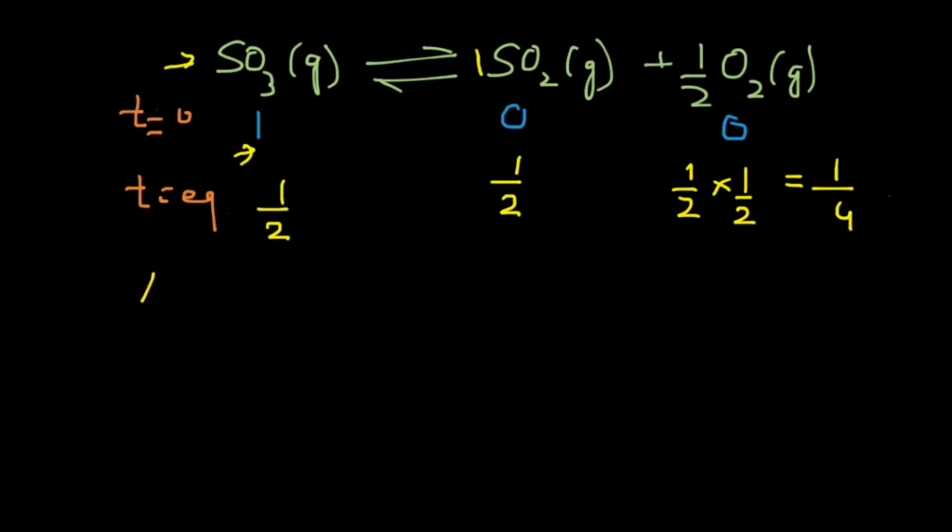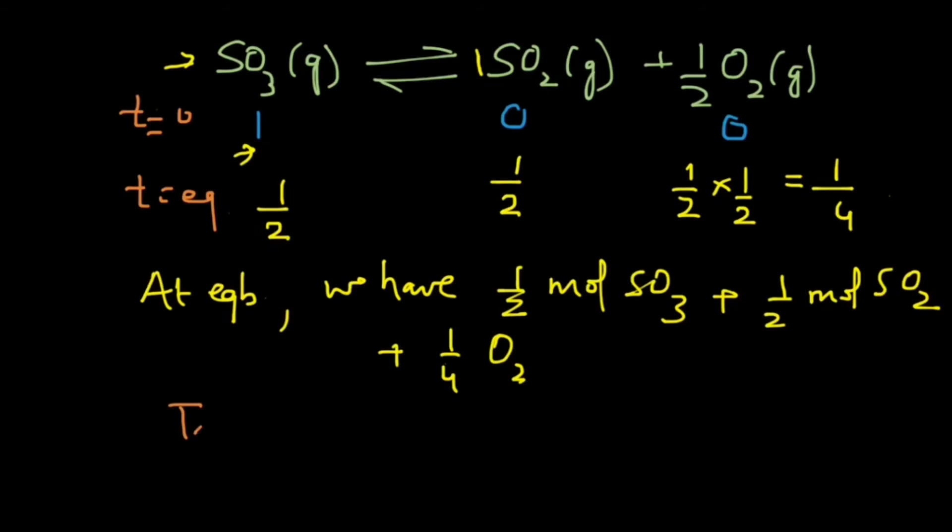So at equilibrium, we have half mole of SO3 and half mole of SO2 and one-fourth mole of oxygen. So the total moles equals to 1/2 plus 1/2 plus 1/4, that gives you 5 upon 4.